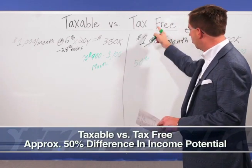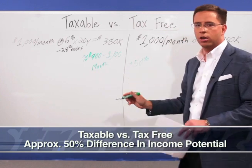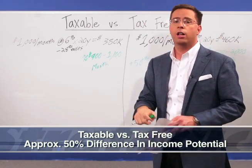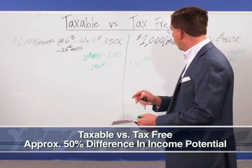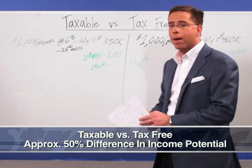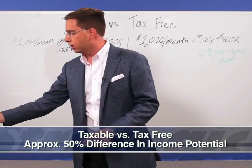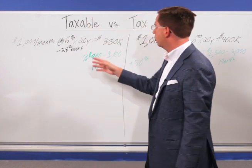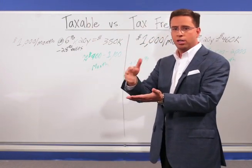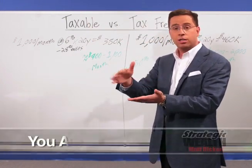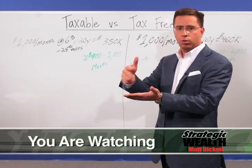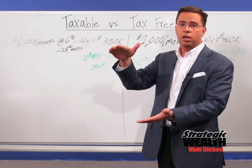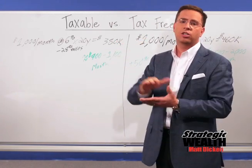Because we grew our money tax-efficiently, we have about 50% more income — more spendable dollars we can use once we retire. Over time, it makes a massive difference. Just to review why the difference is so large: with the taxable investment, you have a smaller pile of money throwing off taxable income, versus the tax-free side, where you have a larger pile of money throwing off tax-free income.